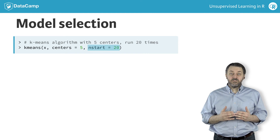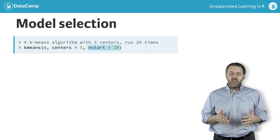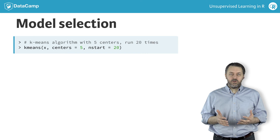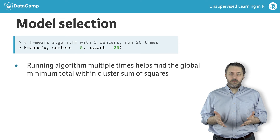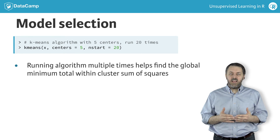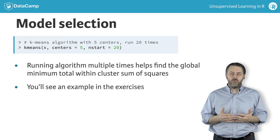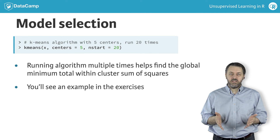By specifying nstart in k-means, the algorithm will be run nstart times, and the run with the lowest total within-cluster sum of squares will be the resulting model. This helps the algorithm find a global minimum instead of a local minimum, but does not guarantee that outcome. In the hands-on exercises, I will show you how to determine the total within-cluster sum of squares from the results of running k-means.